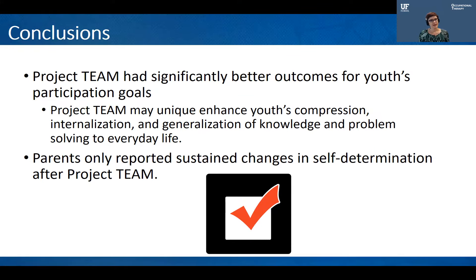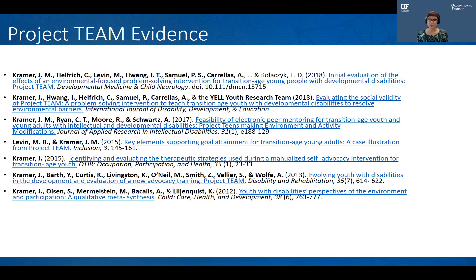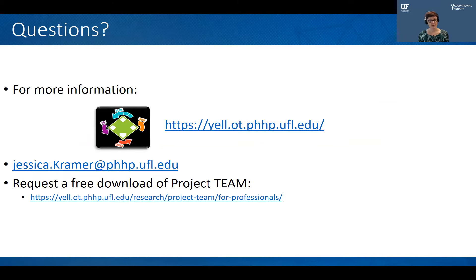In conclusion, Project TEAM had significantly better outcomes for youth's participation goals, because those self-talk questions in the Goal-Plan-Do-Check Game Plan problem-solving process help young adults remember and apply that process in their everyday life. Interestingly, parents of youth in Project TEAM were the only ones to report observed changes in self-determination in other areas of their child's life after Project TEAM. If you'd like to learn more about Project TEAM evidence, there are several articles available, and the full curriculum is freely available. Please visit our website or email us for more information.